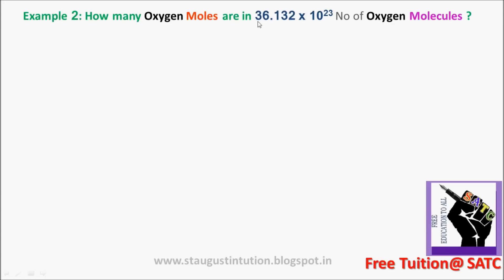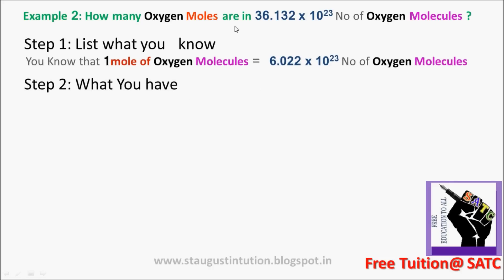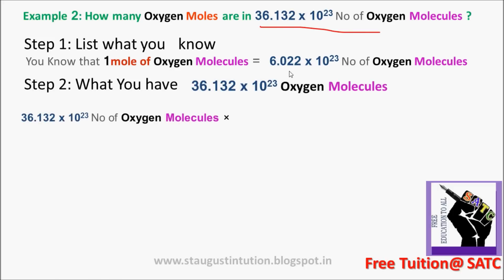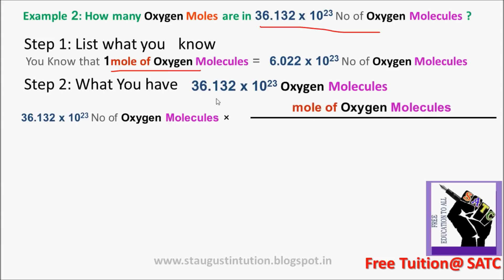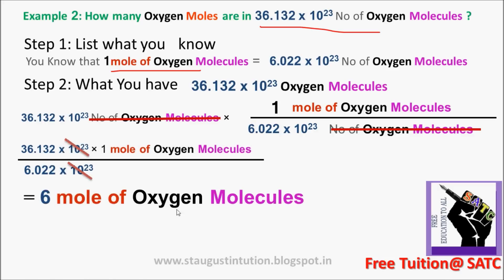How many oxygen moles are in 36.12 × 10²³ number of oxygen molecules? List what you know: 1 mole of oxygen equals 6.02 × 10²³ oxygen molecules. Cancel the number of oxygen molecules. The answer is 6 moles of oxygen molecules.